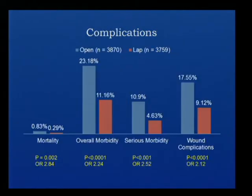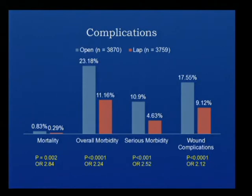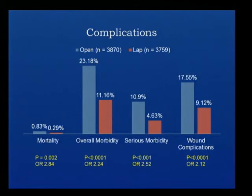This is the main slide to concentrate on. When comparing complications, the mortality rate was 0.29% in the laparoscopic group and 0.83% in the open group — significantly different with a p-value of 0.002 and an odds ratio of 2.8. Overall morbidity was 23% in the open group vs. 11% in the laparoscopic group (odds ratio 2.24). Serious morbidity was 10-11% in the open group vs. 4.6% in the laparoscopic group (odds ratio 2.5). Wound complications were 17.5% in the open group vs. 9.12% in the laparoscopic group. All differences were statistically significant.